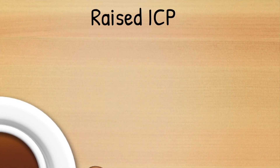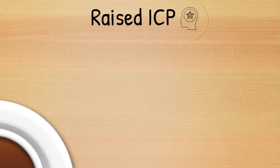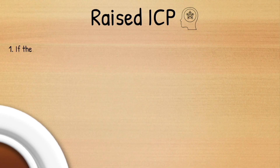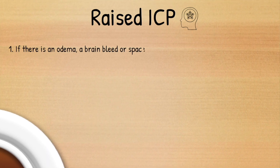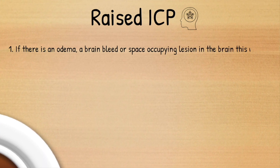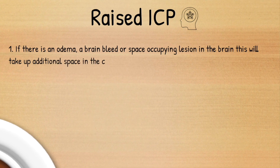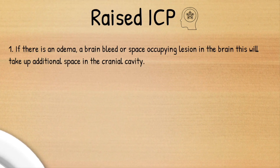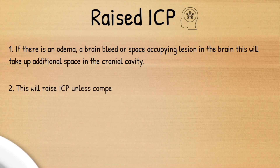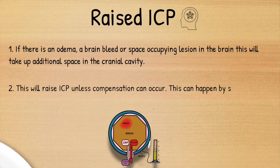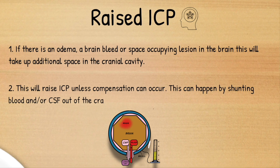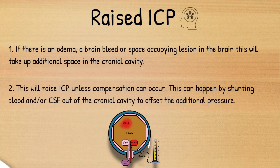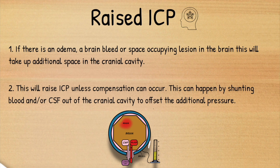Now we're going to move on to talk about pathological states where the intracranial pressure is higher than it would normally be. If there is oedema, bleeding or a space occupying lesion in the brain, this will take up additional space in the cranial cavity. This will raise the intracranial pressure unless compensation can occur. This can happen by shunting blood and/or CSF out of the cranial cavity to offset this additional pressure.